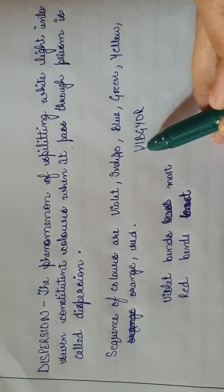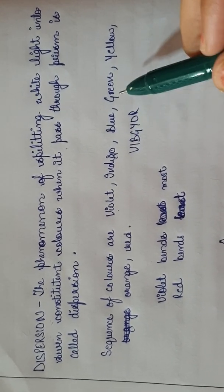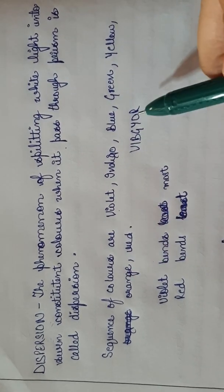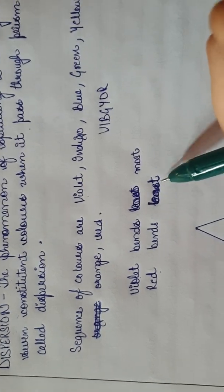First words: V for Violet, I for Indigo, B for Blue, G for Green, Y for Yellow, O for Orange, R for Red. Violet bends the most. Red bends the least.